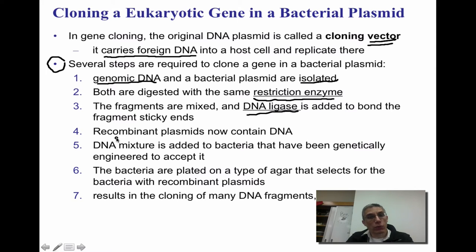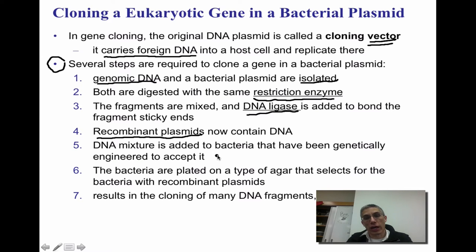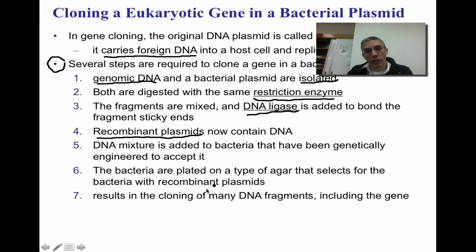Step four is that we're hoping to have recombinant plasmids that now contain the DNA—that gene of interest. We're going to add that DNA mixture to the bacteria. These bacteria have been genetically engineered to accept the new recombinant plasmid. The bacteria are going to be plated on a type of agar that is going to select only for the bacteria that have the recombinant plasmids. Our hope is that the result is the cloning of many, many DNA fragments that definitely include that gene of interest.